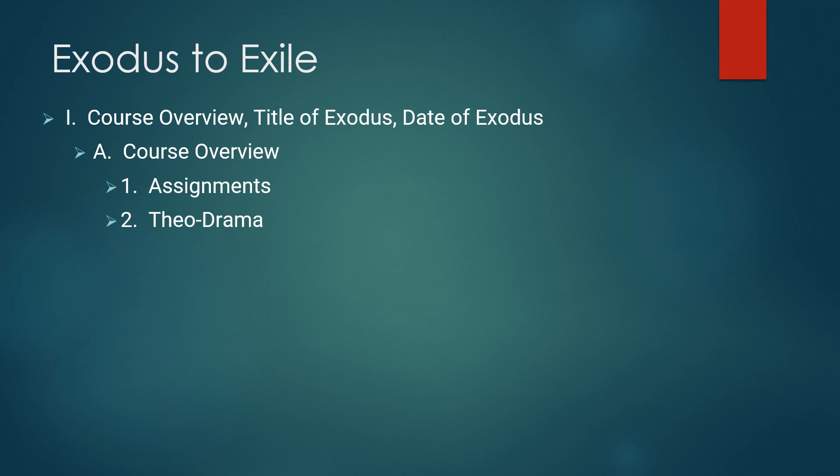The rest of the Bible is the outworking of that promise as you go from Abraham to David to Matthew 1:1 — Jesus Christ, the son of Abraham, the son of David. This course provides a survey of Israel's history as recorded in Exodus through 2 Kings, with special attention given to selective texts where it also addresses the hermeneutics of biblical narrative. The prerequisite is Genesis, the foundation of Old Testament history.